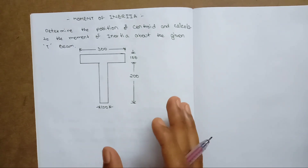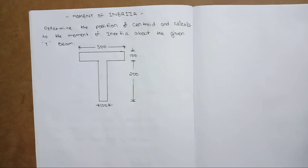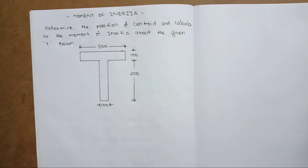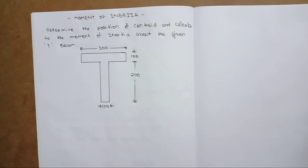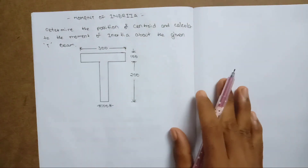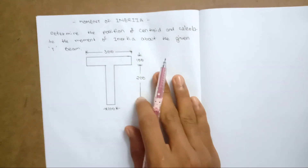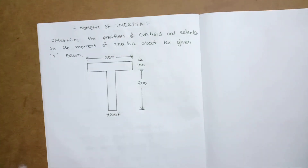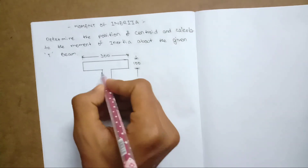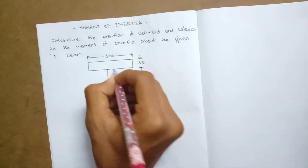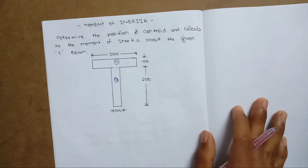The first step is to find the centroid. We are going to divide the shape into two rectangles — one, two. These two rectangles, friends.